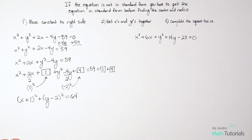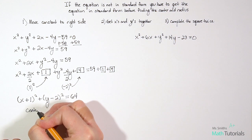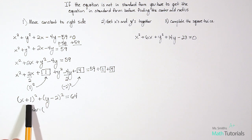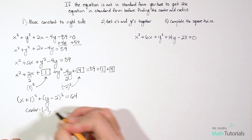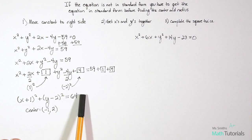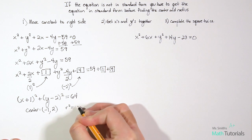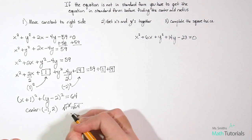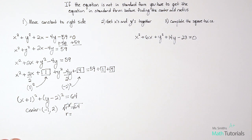Writing the final standard form: (x + 1)² + (y - 2)² = 64. The center uses opposite signs: plus 1 becomes -1, minus 2 becomes +2. So center is (-1, 2). For the radius, r² = 64, and the square root of 64 is 8. Our radius is 8. It just took a bit more work to get there.